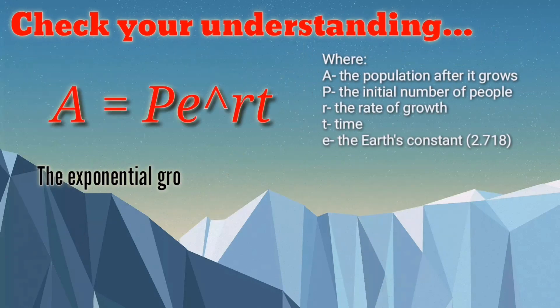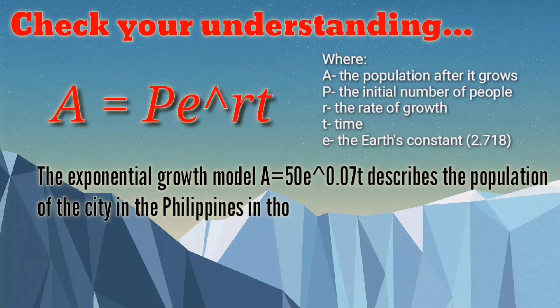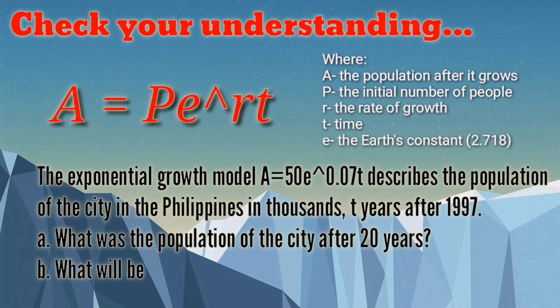Now answer this practice problem. The exponential growth model A equals 50 times E raised to 0.07T describes the population of a city in the Philippines in thousands, T years after 1997. A: What is the population after 20 years? B: What is the population in 2037? Comment your answer.